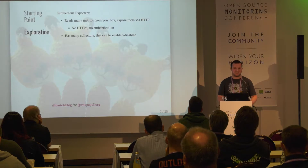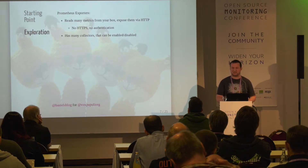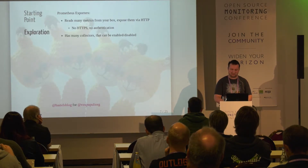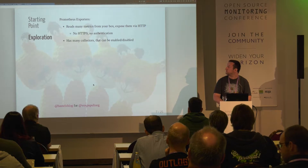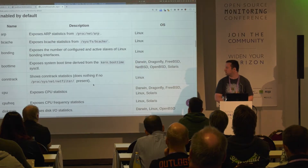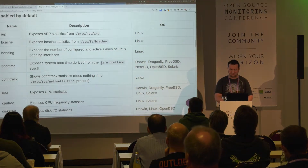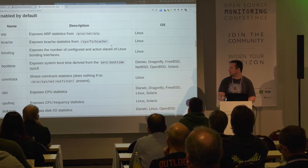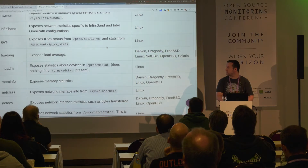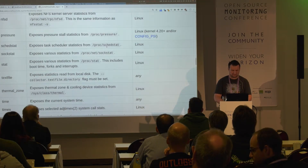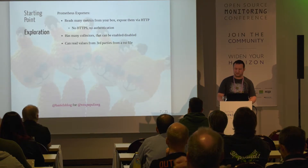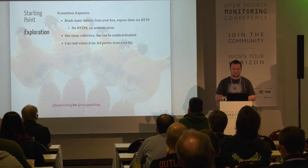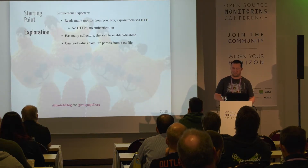There are many collectors available in the node exporter documentation that you can enable and disable — for example, scraping your local ARP cache, getting information about the used file system. Also, a very nice feature: you can generate data in the same format, throw it into a text file, and the node exporter will just read the text file and present the data via HTTP as well.